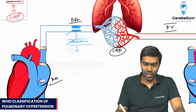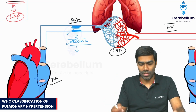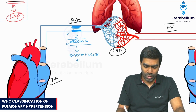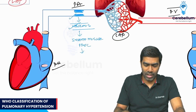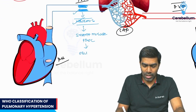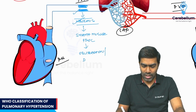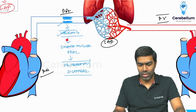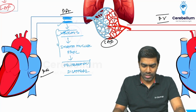Vasoconstriction will be followed by further sequence of events where there will be smooth muscle proliferation, ultimately leading to complete obliteration of these arterioles — these arterioles will disappear. Because the caliber of these arterioles decreases over a period of time, there will be a significant increase in pulmonary vascular resistance.